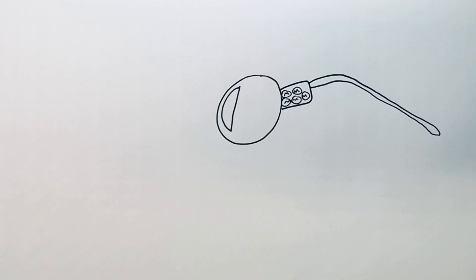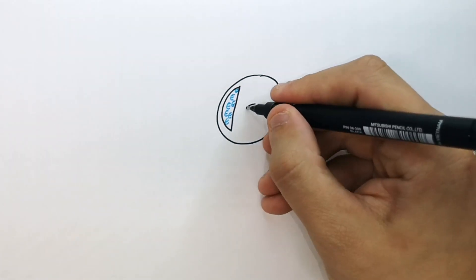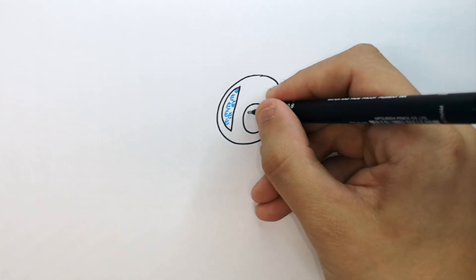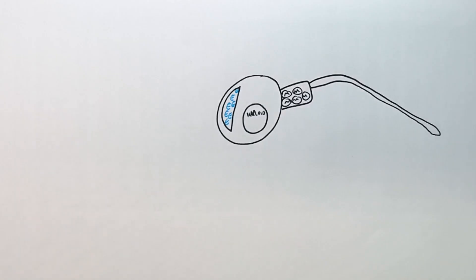Mitochondria are organelles of the cell that release energy. Inside the acrosome is where the sperm stores enzymes. This is the nucleus which is where DNA is stored, and it is a haploid nucleus with only one set of chromosomes.